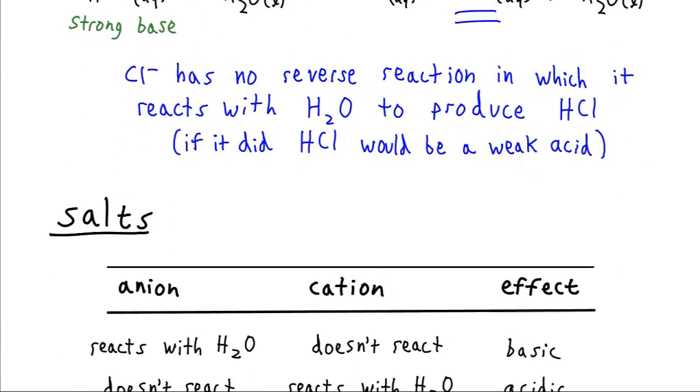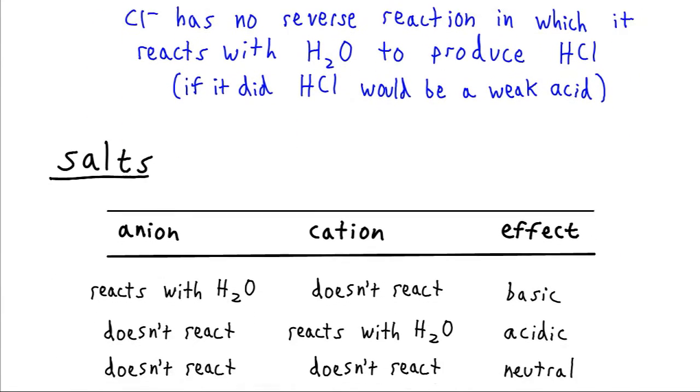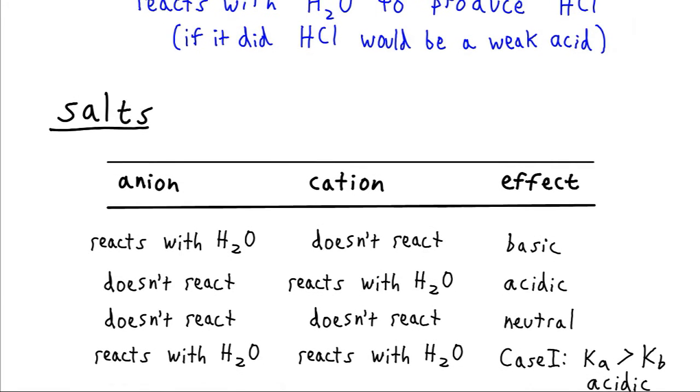So the cumulative effect now is going to be if we have an anion that reacts and the cation doesn't do anything, it's going to be a basic solution. We generated OH-minus, we haven't done anything else. Conversely, if only the cation reacts and we've generated H-plus, we haven't done anything else, so it will be acidic. If neither of them reacts, we haven't done anything at all, it's going to remain neutral at a pH of 7 for pure water.